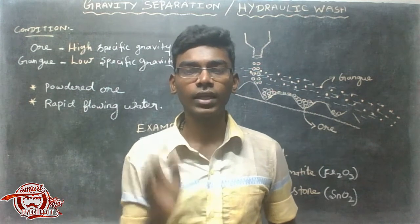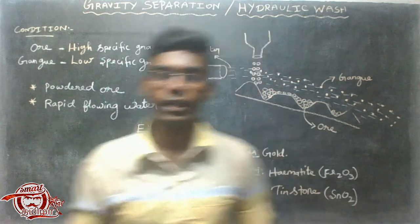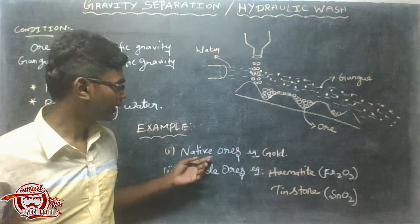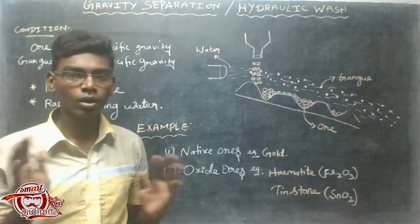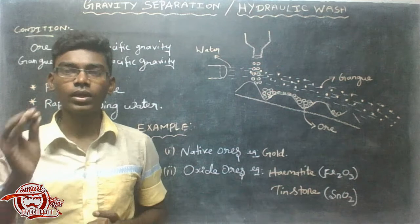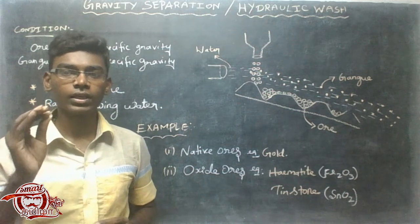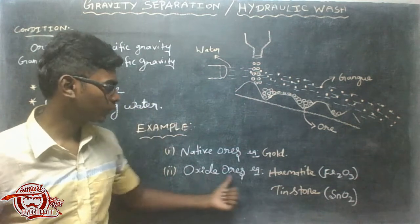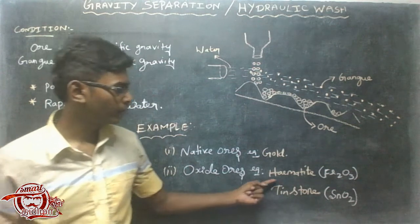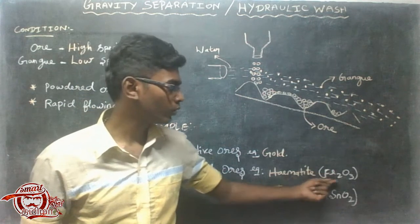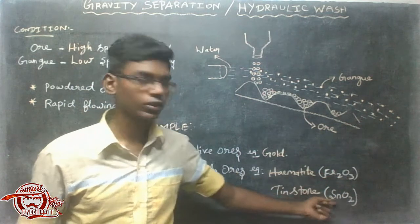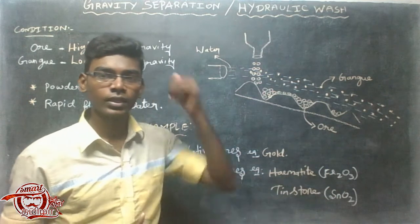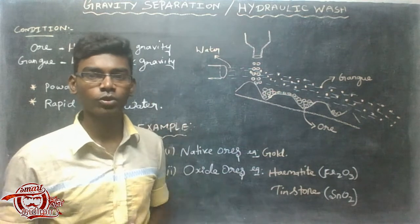It is a hydraulic wash. The main thing about this is oxide ores. Oxide ores are native — it is gold. For example, hematite is Fe₂O₃, cassiterite or tin stone is SnO₂. If you want to remove it, it will be easier to remove it.